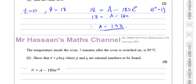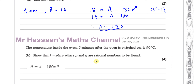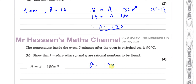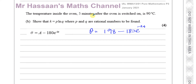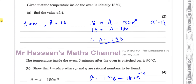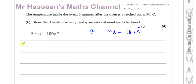The temperature inside the oven 5 minutes after the oven is switched on is 90 degrees Celsius. Show that K equals P ln Q, where P and Q are rational numbers to be found. We now know A is 198, so the equation is theta equals 198 minus 180 times E to the power of minus KT. When T equals 5, theta equals 90. We substitute these values into the equation to find the unknown K.